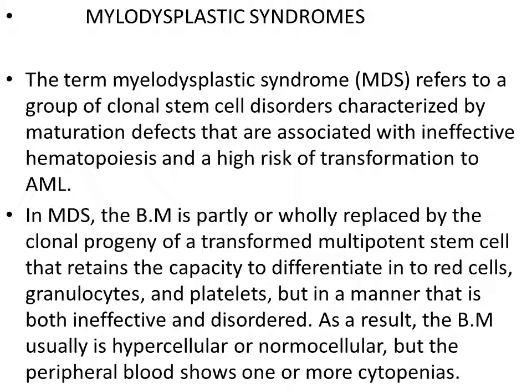As a result, cells are being produced, but this hematopoiesis is ineffective and disordered. The cells are produced but are defective in nature, so many of these are destroyed within the bone marrow — this is ineffective hematopoiesis. As a result, the bone marrow is usually hypercellular or normocellular, but the peripheral blood shows one or more cytopenias.